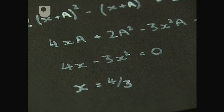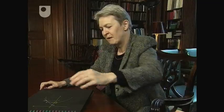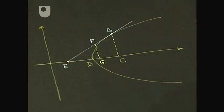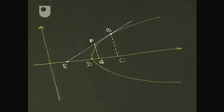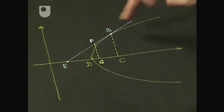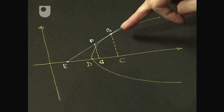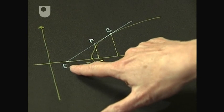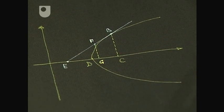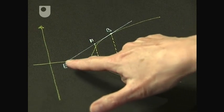Could Fermat also find tangents? I will show you again an example. Fermat considers a parabola with an axis horizontal, and he wants to construct a tangent to the parabola at point B. In the Euclidean way of constructing straight lines, you need a second point. So Fermat is trying to find the intersection E with the horizontal axis — he has to find the length EC.